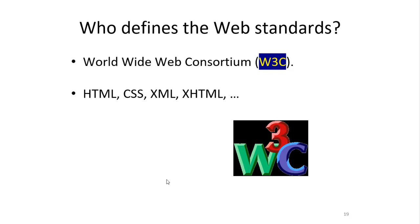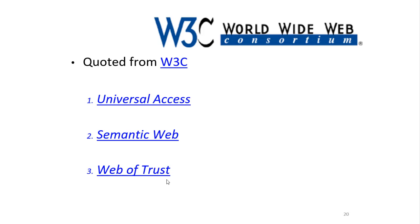Web standards are not defined by browser companies or Microsoft, but by the World Wide Web Consortium, W3C. The specifications that form the web standards include HTML, CSS, XML, XHTML, and others. The W3C's long-term goals for the web include universal access — to make the web accessible to all by promoting technologies that take into account differences in culture, languages, education, ability, material resources, and physical limitations of users on all continents.